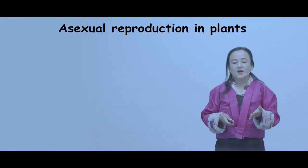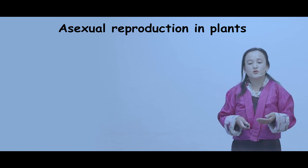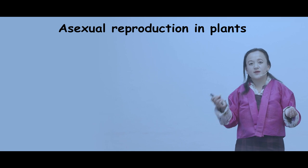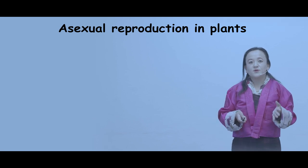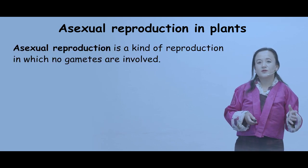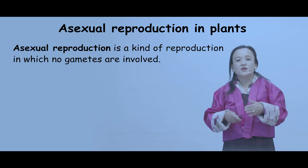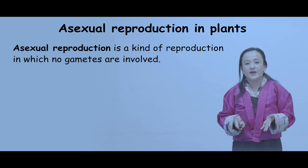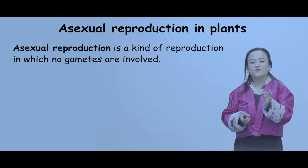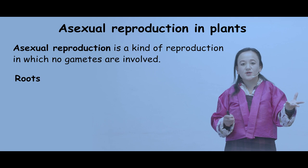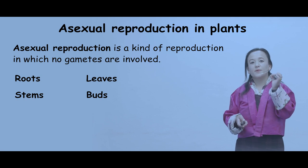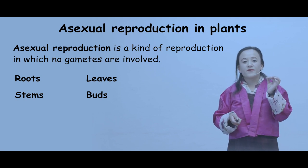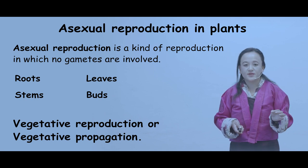Now let us look at asexual reproduction in plants. Plants can also reproduce asexually. Asexual reproduction is a kind of reproduction in which there is no involvement of gametes. Plants multiply through vegetative parts such as roots, stems, leaves, and buds. This type of asexual reproduction is called vegetative reproduction, or vegetative propagation.